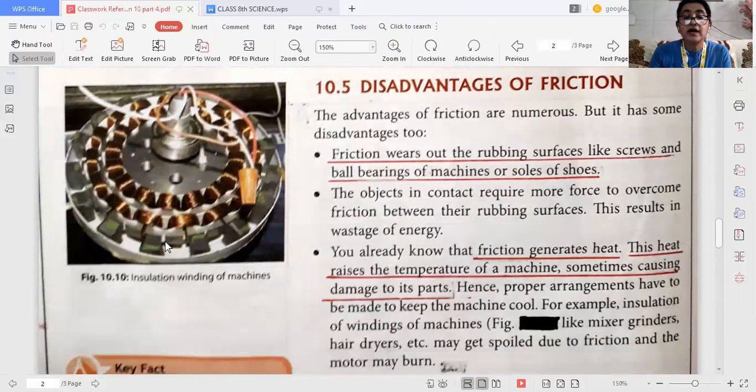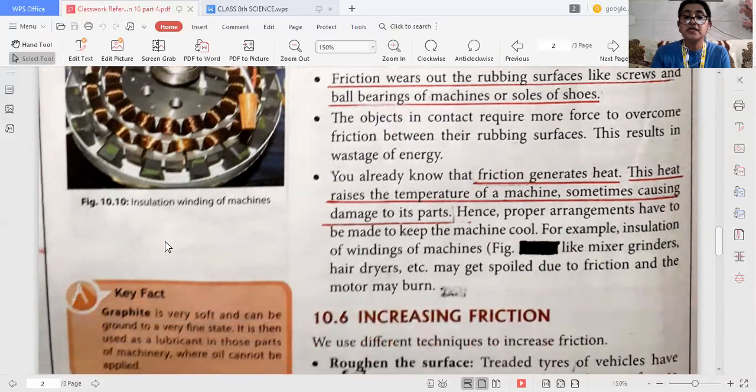The disadvantages are like the friction wears out the rubbing surfaces like screw and the ball bearing of machines, and they also wear out the soles of the shoes. Friction always generates heat, and this heat raises the temperature of a machine, sometimes causing damage to its parts also.